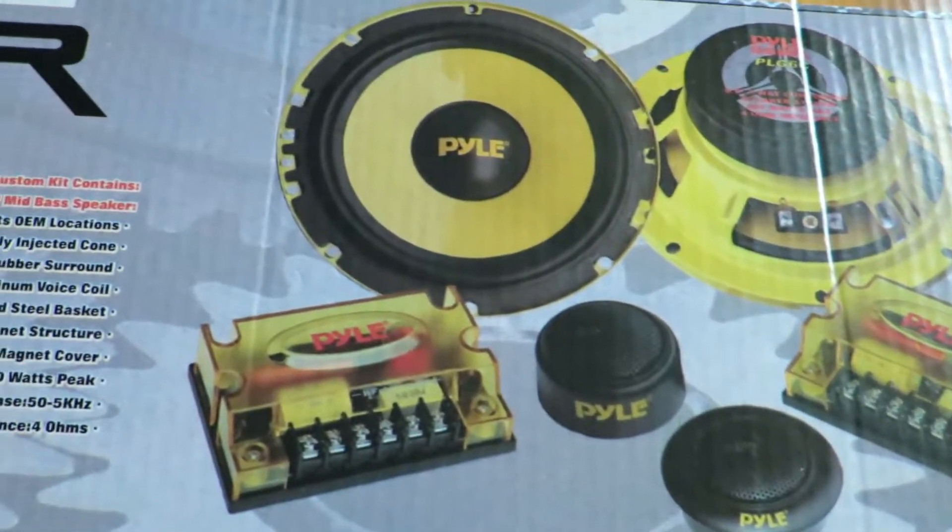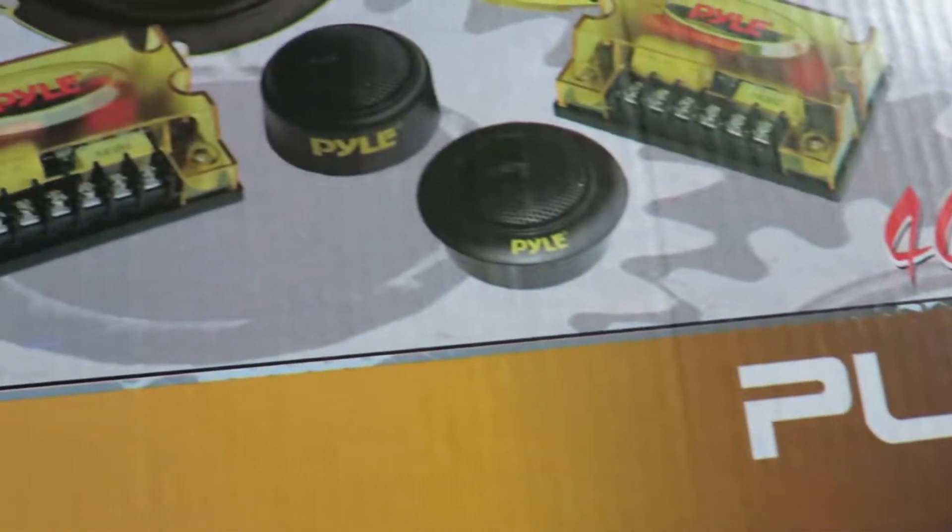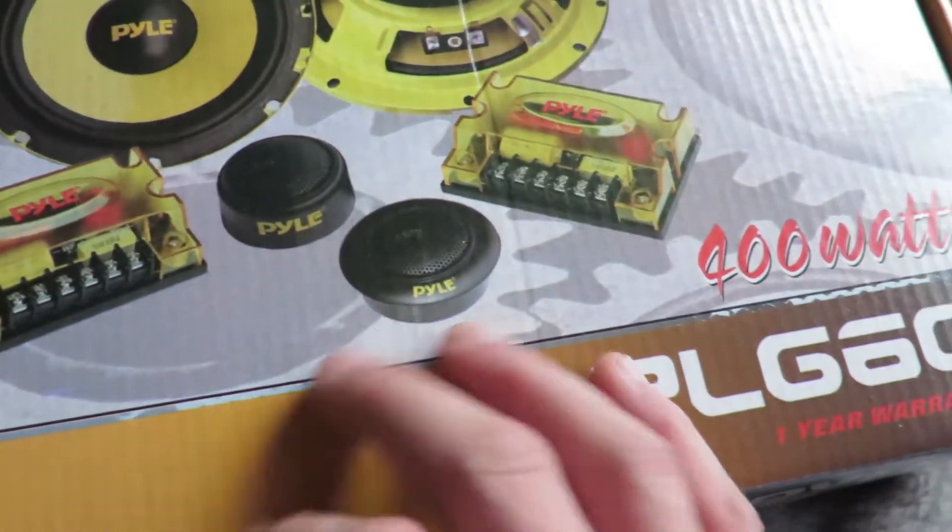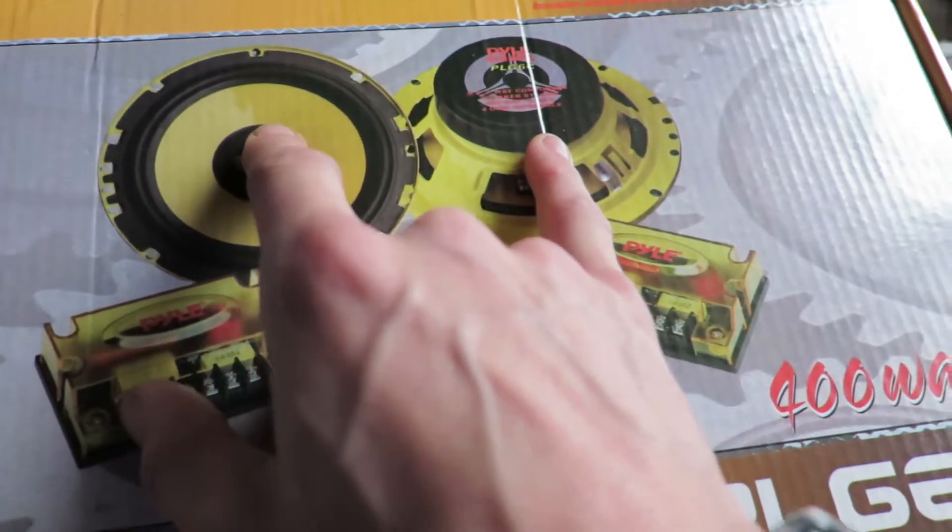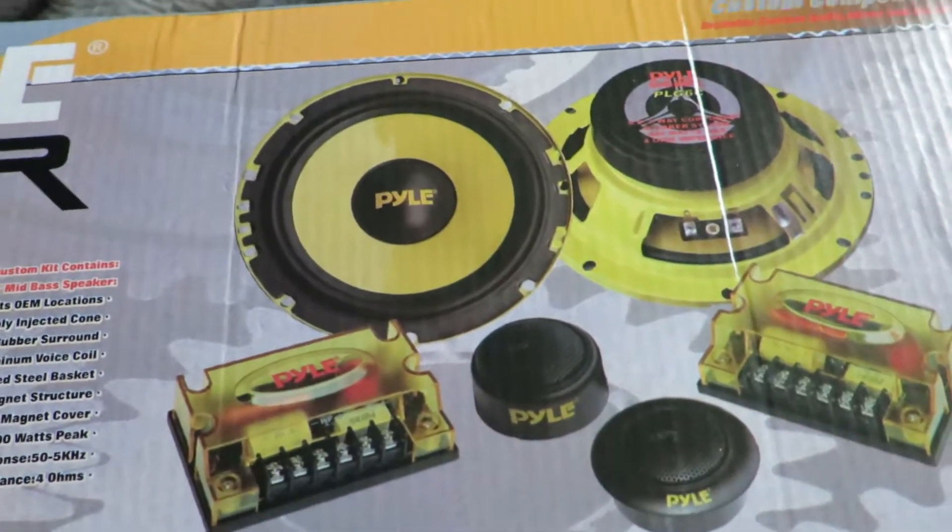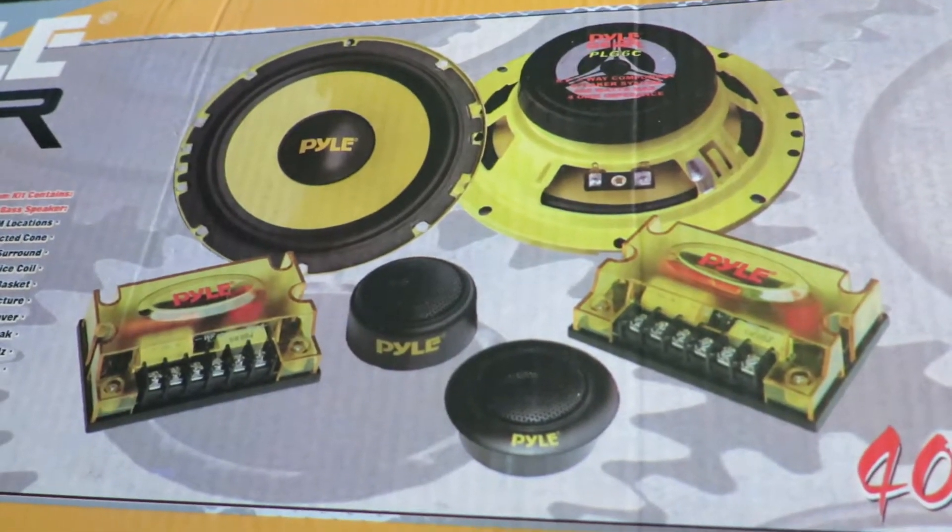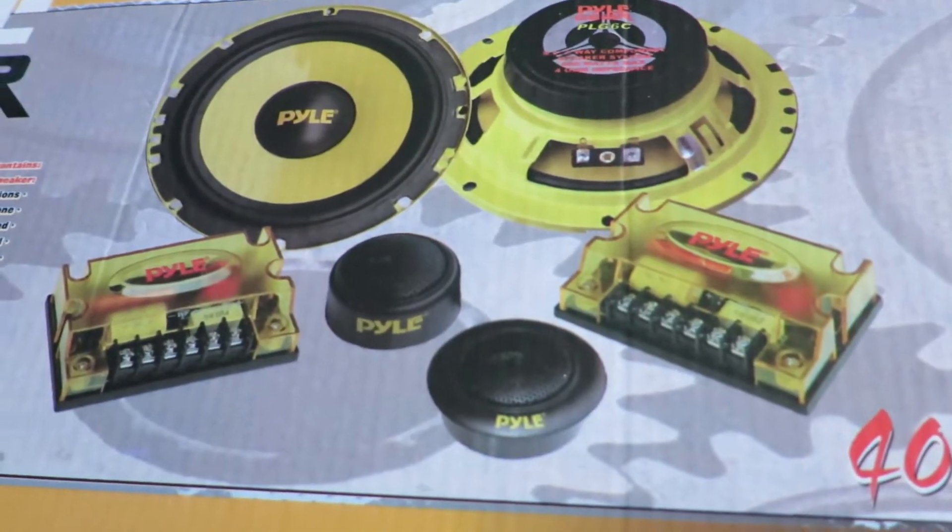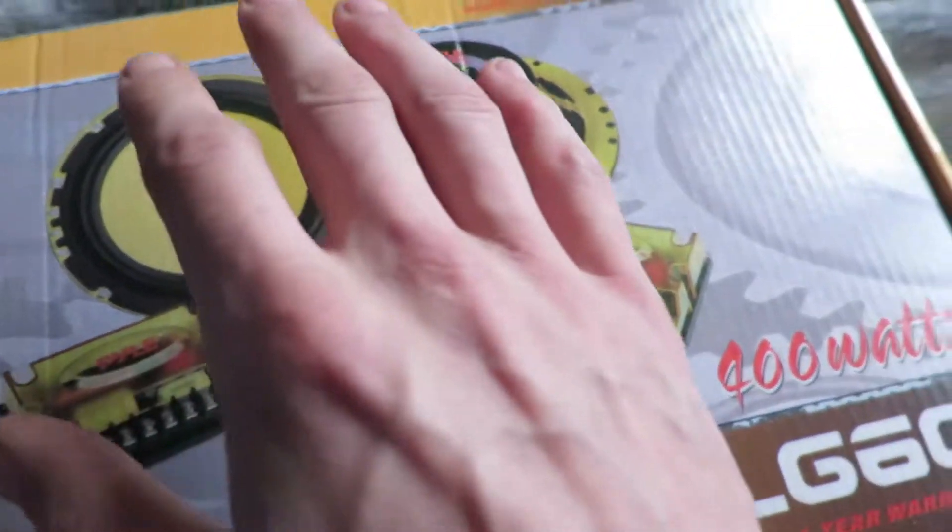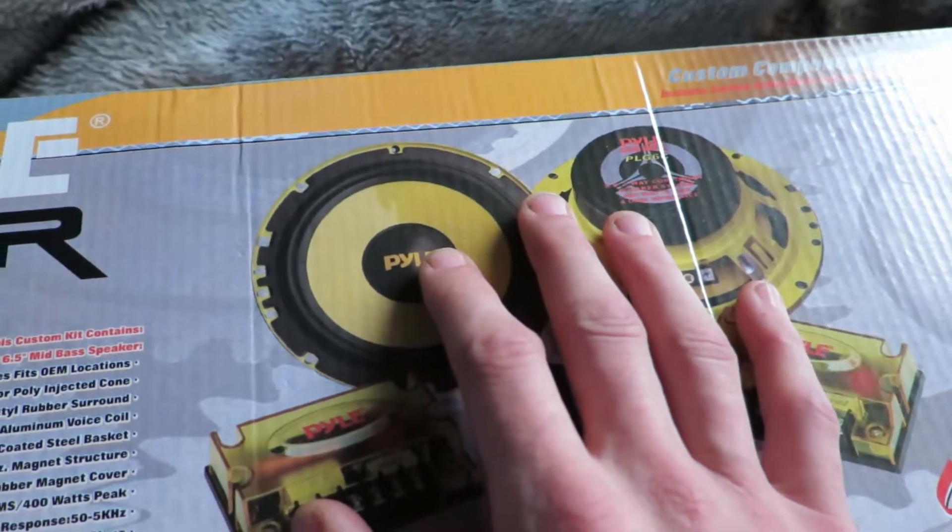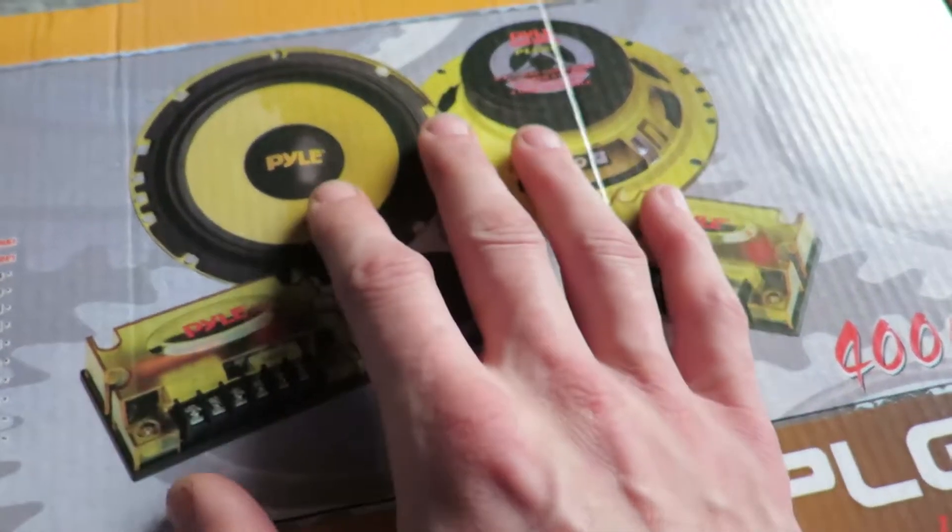These are the Pyles, PLG6C, 400 watt speakers, with tweeters and crossovers, two crossovers with two 6x5 400 watt speakers. These are really good speakers. I had these in one of my old cars, it's in one of my videos either, it's a 1986 Honda CRX, and I put two of these, same ones, in there. They've got a lot of bass to them, these are really good speakers, that's why I went with these.